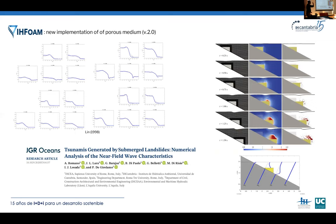We validated this new model with classical laboratory experiments for dam breaks using two different materials — glass beads and present rocks — for two different initial wave heights. We then extended this new porous media solver to the overset framework in order to resolve tsunamis generated by submerged landslides.